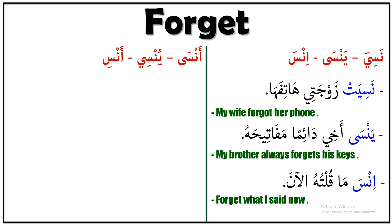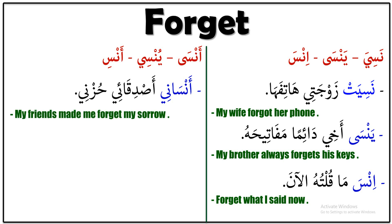Now let's look at ansa, yunsi, ansi. Ansaani asdiqai huzni — it means 'my friends made me forget my sorrow.' Ansaani = made me forget, asdiqai = my friends, huzni = my sorrow.